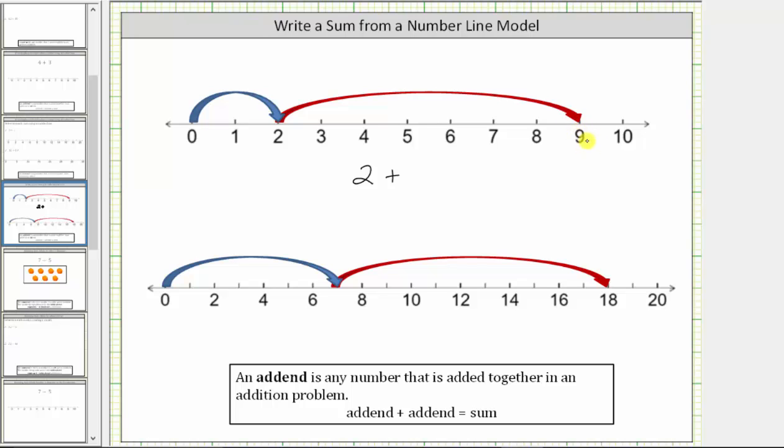Nine is not the second addend, nine is the sum, which means we now know two plus the second addend equals nine. To determine the second addend indicated by the red arrow, we need to determine how many units we moved from two to nine. So starting at two, we count the number of units to nine: one, two, three, four, five, six, seven.